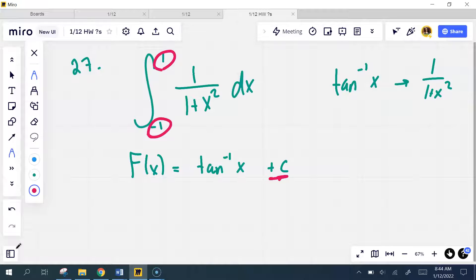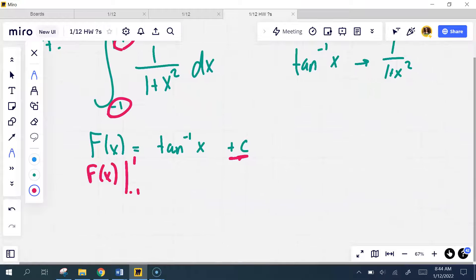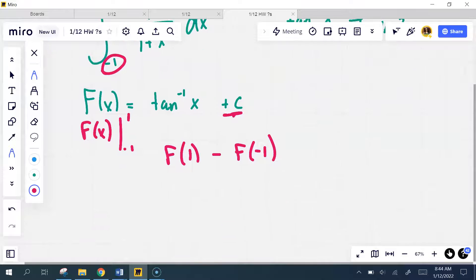right we're not going to worry about that plus c. So what I'm going to do is I'm going to evaluate F of x from negative 1 to 1. So I'm going to plug in the b first, so it's going to be the antiderivative evaluated at 1 minus the antiderivative evaluated at negative 1.